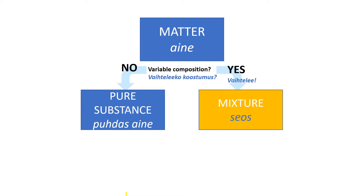Mixture — seos — is a substance composed of two or more different types of pure substances that can be combined in different variable proportions. So the main characteristic of a mixture is that it has variable composition.